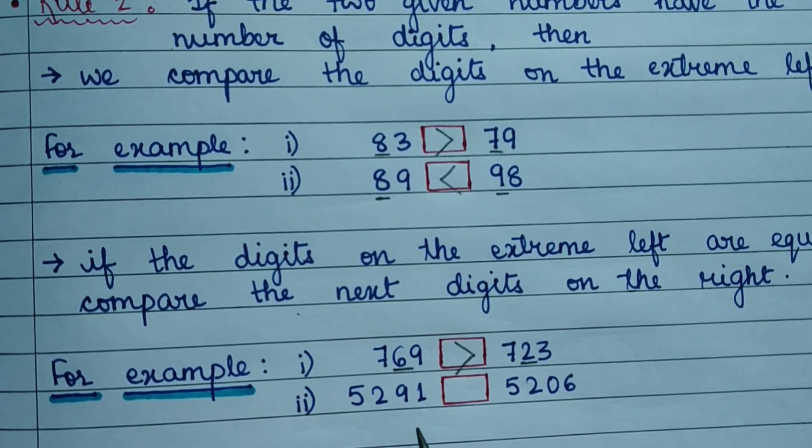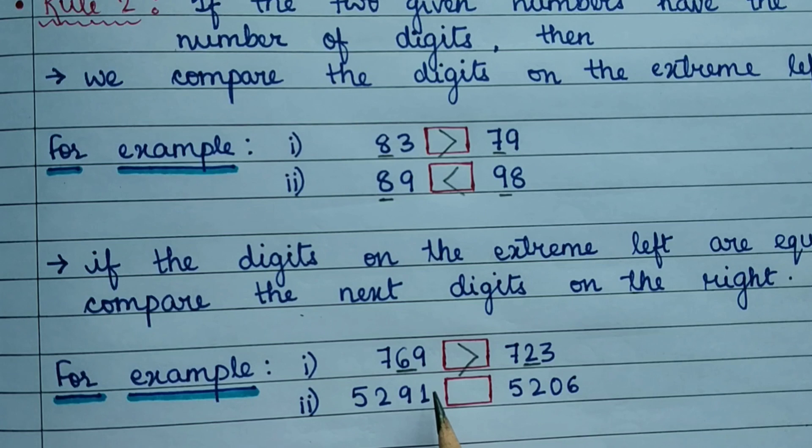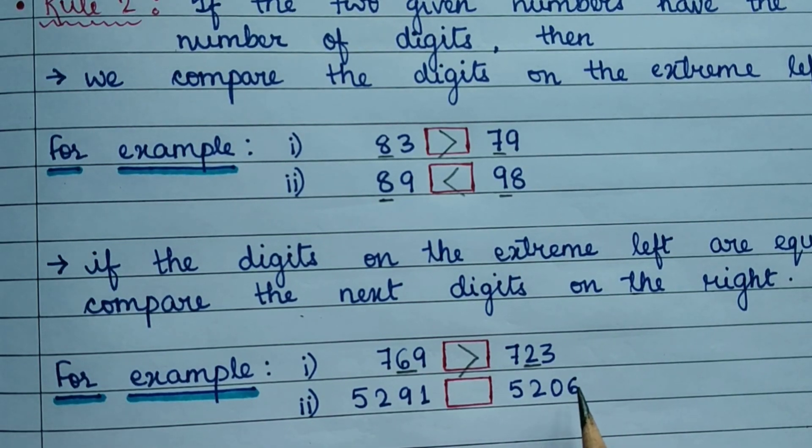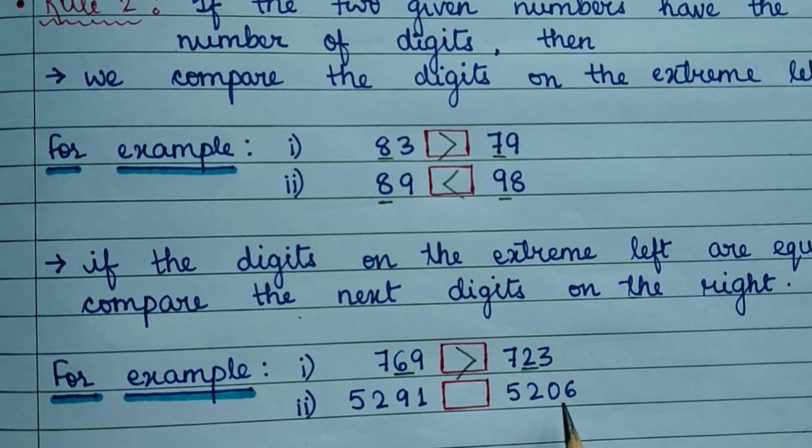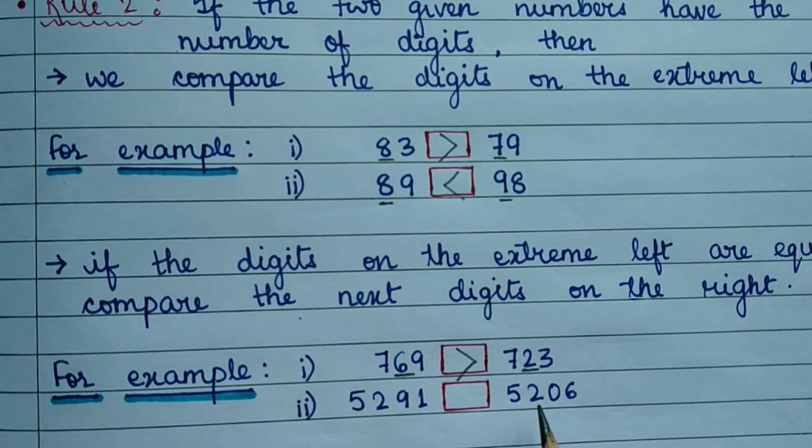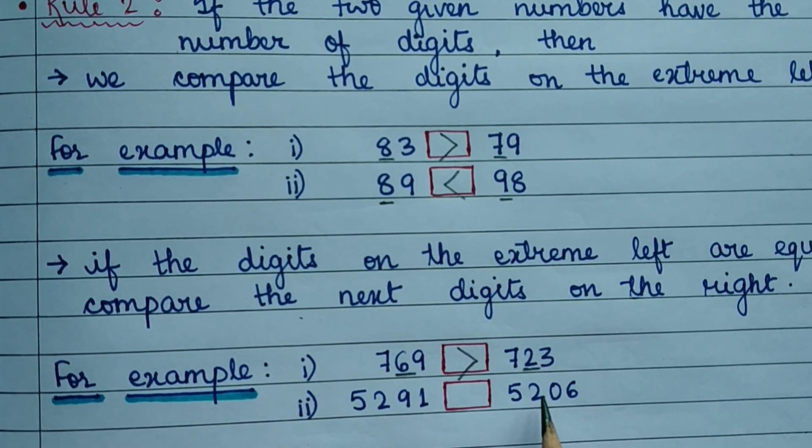And the next example: 5291 and 5206. Here we have two numbers with the same number of digits. Donohan four digit number hai. And donohan ke extreme left digits bhi same hai. And uske baad ke digits bhi same hai.